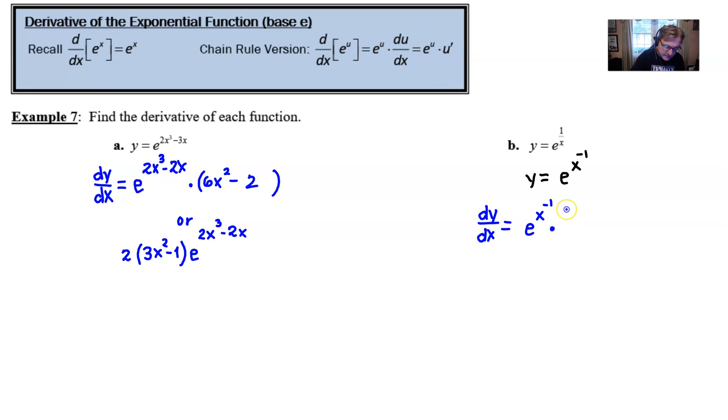That is the e to the u part right here. But we finish off by multiplying by the derivative of that x to the negative 1, which of course is negative 1 times x to the negative 2 when we use the power rule. That derivative is correct. Not very well simplified, of course, but we can take care of that just simply by working a little bit of algebra magic here.